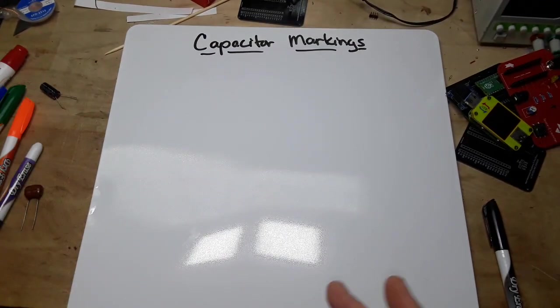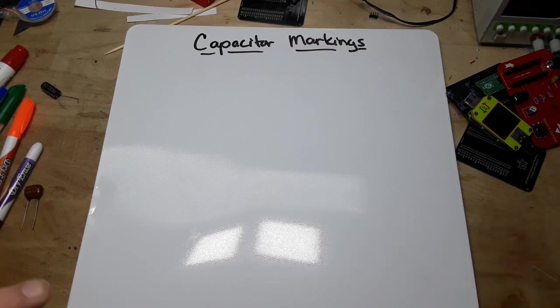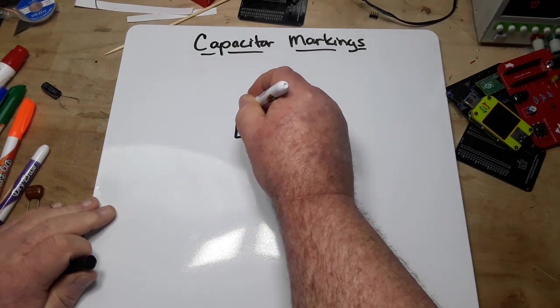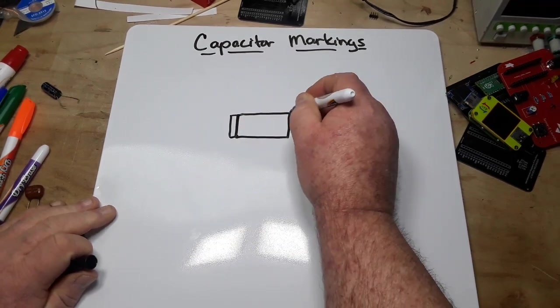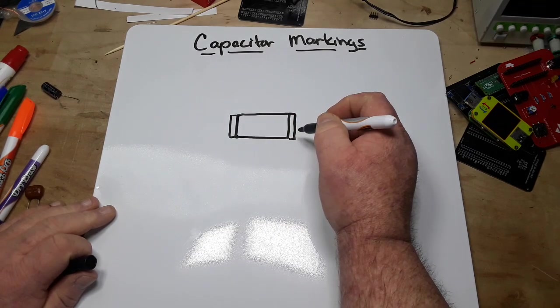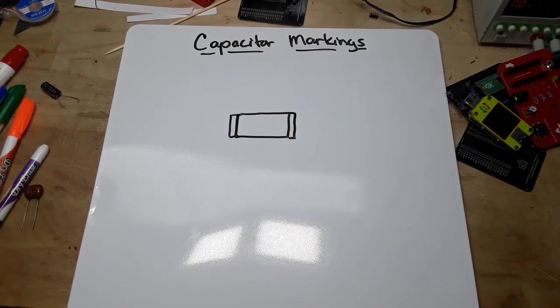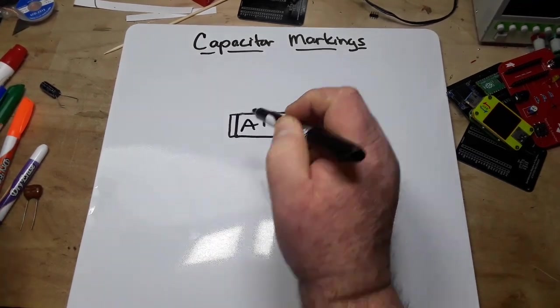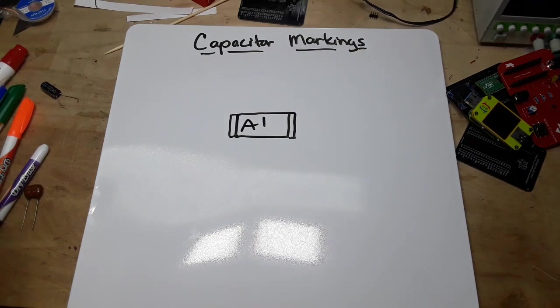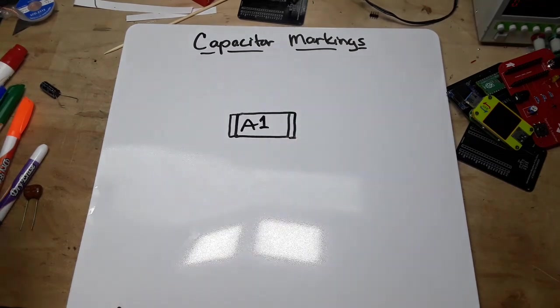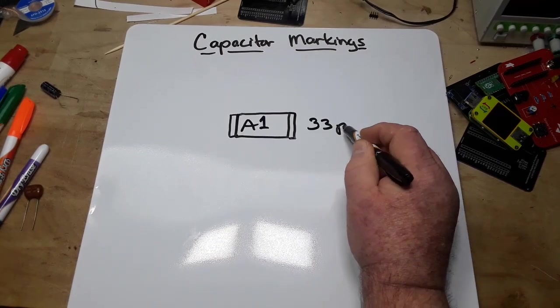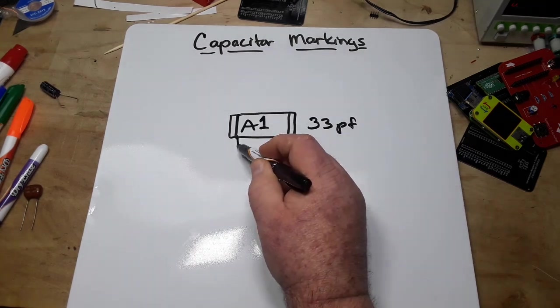Same with surface mount capacitors - they're relatively easy to read. If you get yourself a surface mount capacitor, it looks like this with little solder blocks on the end. Let's say it says something like A1 - pardon my writing, it's not very good - well that would be 33 picofarad.